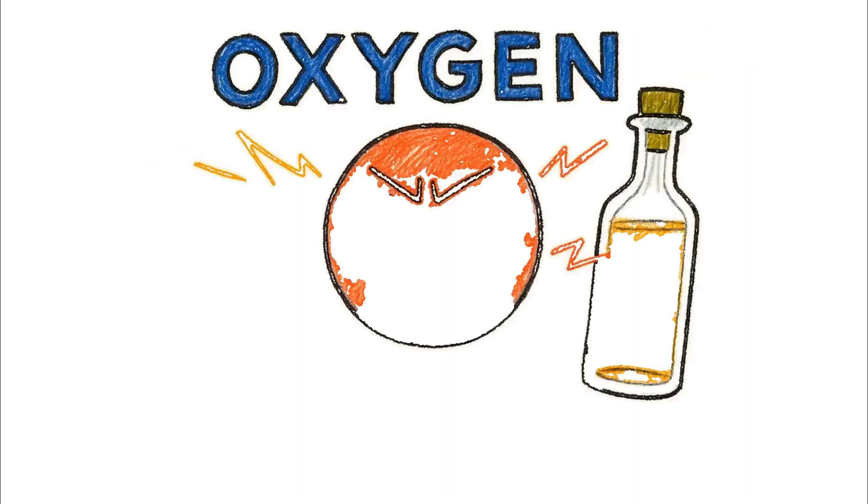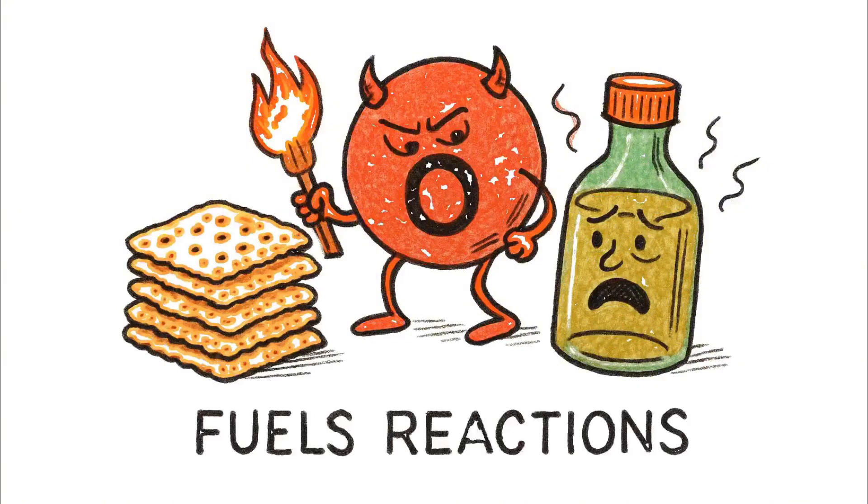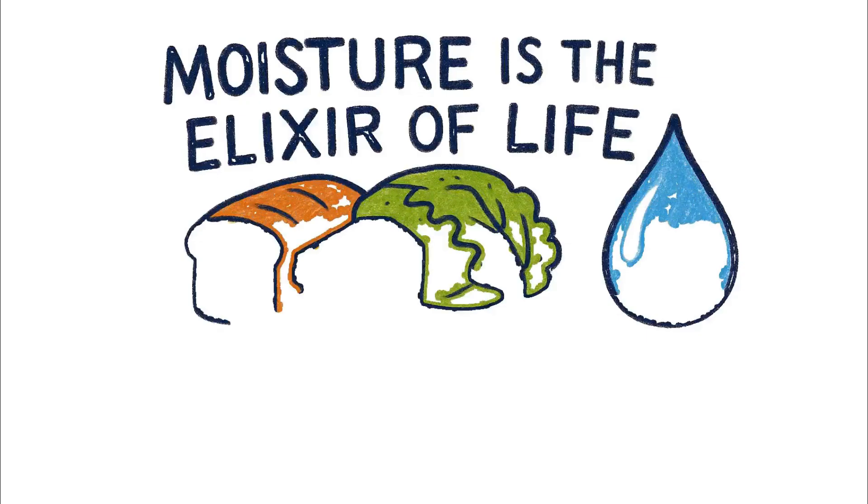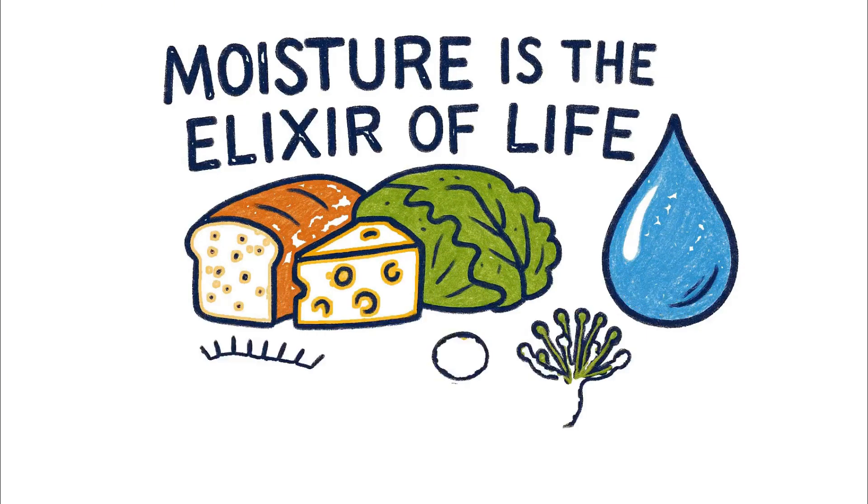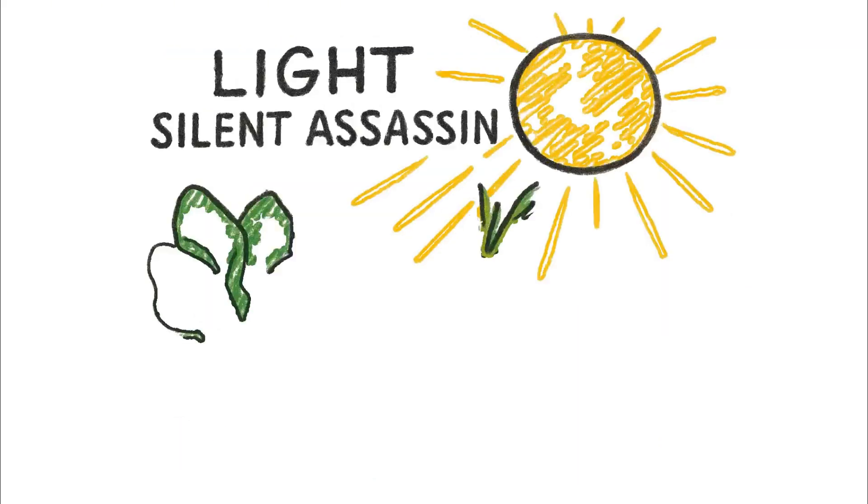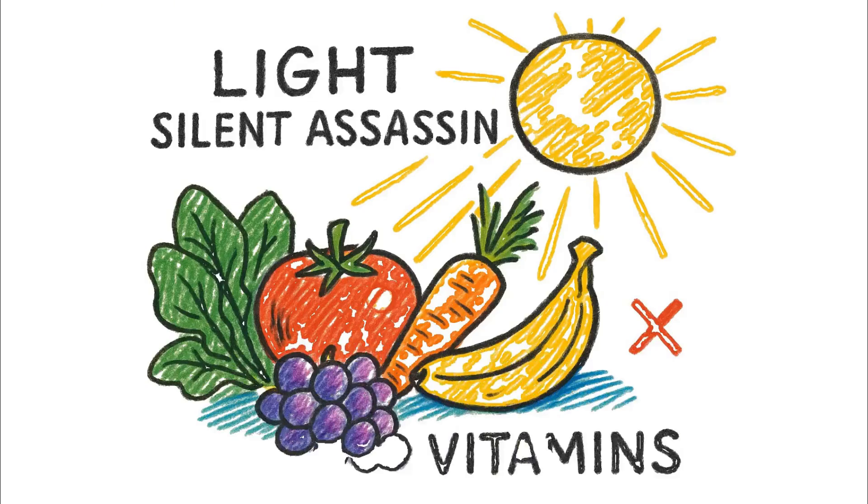Oxygen is the great oxidizer. It fuels the reactions that make your crackers go stale and your oils turn rancid. Moisture is the elixir of life, not just for you, but for the bacteria, yeasts, and molds eager to devour your supplies. And light, especially sunlight, is a silent assassin, degrading vitamins and nutrients, bleaching away color and value.